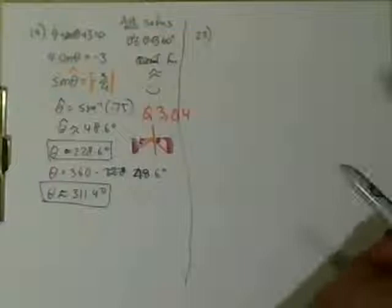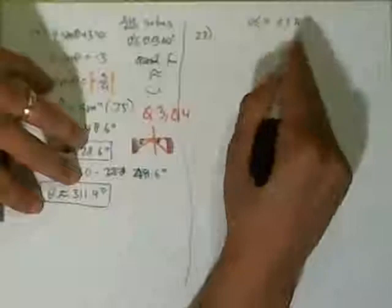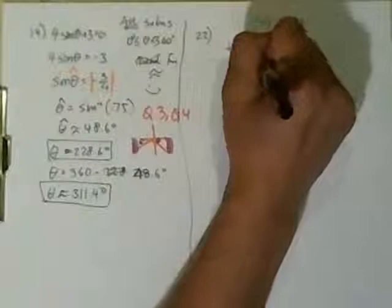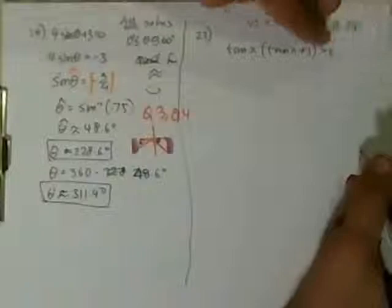22. Solve for X. X is going to be between 0 and 2 pi, which means we're going to be in radians, in exact values only. So we're trying to figure it out. The tangent of X times the tangent of X plus 1 is equal to 0. We're going to factor it out. Zero product property says that each factor is equal to 0. Because on the right side, it's already equal to 0. So tangent of X equals 0. Tangent of X plus 1 is equal to 0.